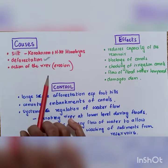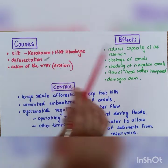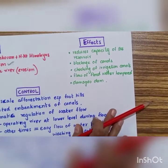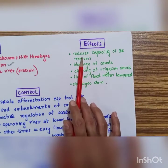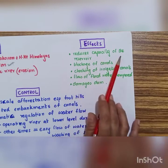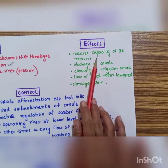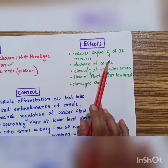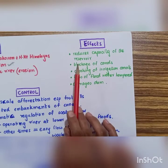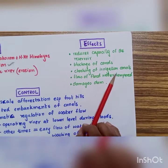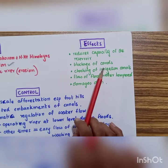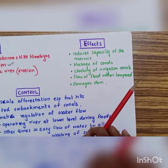What happens as a result of siltation? Let's concentrate on the effects now. What does siltation lead to? Siltation leads to a reduction in the capacity of the reservoir. It's very understandable. If we fill half of the glass with sand and the remaining half is with water, the capacity of that glass would be lesser than the glass which is completely filled with water.